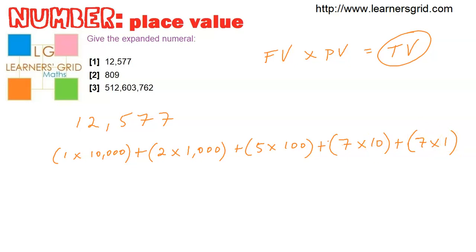And just tidying that up a little bit, you'd have something like ten thousand plus two thousand plus five hundred plus seventy plus seven. That's one form that's fully expanded, and this is another expanded form. So number one is done.